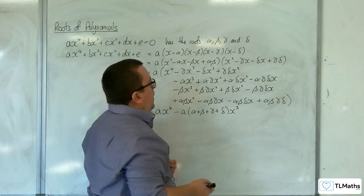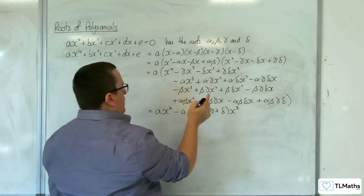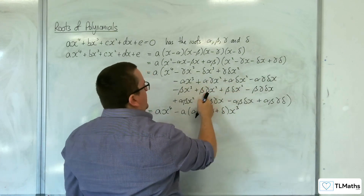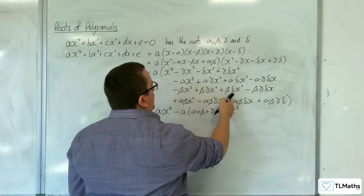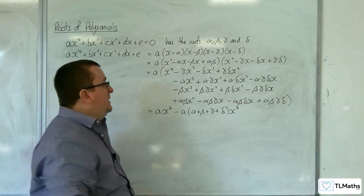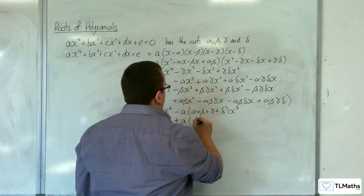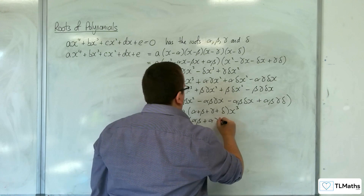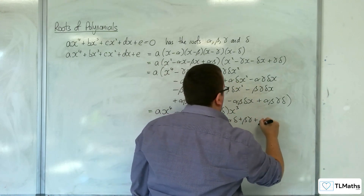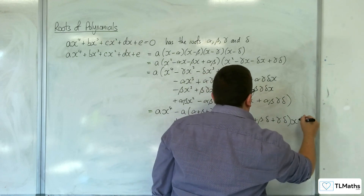For the x² terms, we have all possible products of pairs: +a(αβ + αγ + αδ + βγ + βδ + γδ)x².